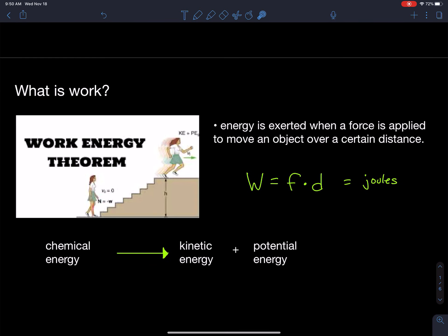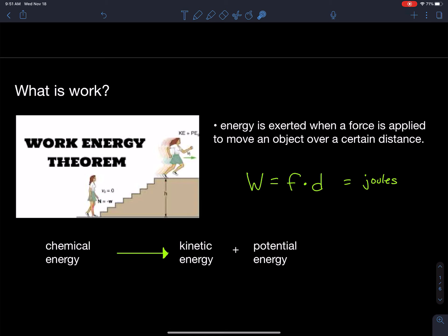Work is what happens when energy is exerted to move an object a certain distance using a force. We use the formula: work equals force times distance. Here's an example of somebody climbing stairs — it takes energy out of you to climb them. This person is using the chemical energy stored inside them, transforming it into kinetic energy while running at the top of the stairs, and gaining potential energy because she did work against gravity to lift herself up. We could calculate the exact kinetic and potential energy if we knew how many joules she burned.